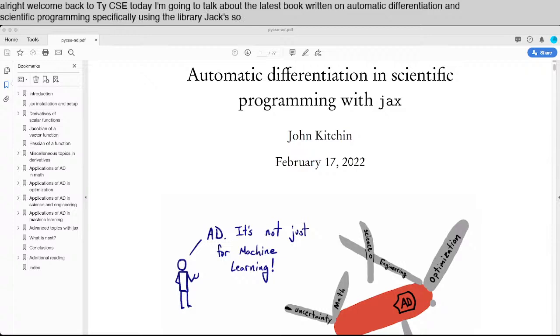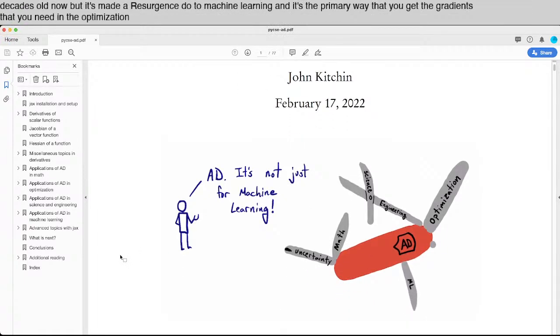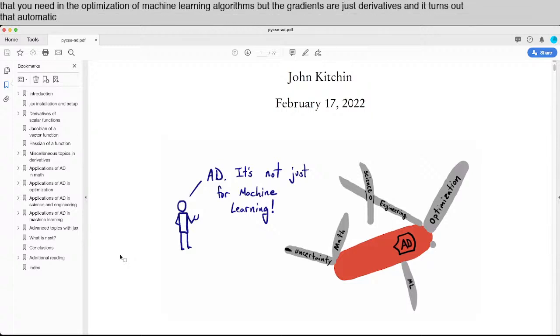So automatic differentiation is an old idea, it's a couple decades old now, but it's made a resurgence due to machine learning, and it's the primary way that you get the gradients that you need in the optimization of machine learning algorithms. But the gradients are just derivatives, and it turns out that automatic differentiation can be used for a lot of other things in science and engineering.